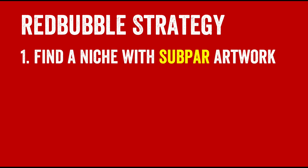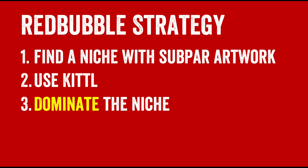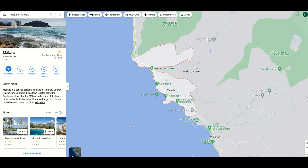The first strategy involves starting on Redbubble and then using Kittle. What we're going to do first is go on to Redbubble and we're going to find a niche with subpar artwork. And then using Kittle, we're going to go in and we're going to dominate the niche. Let me show you how this is done.